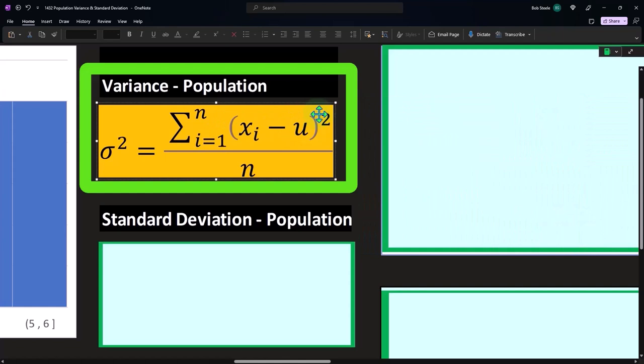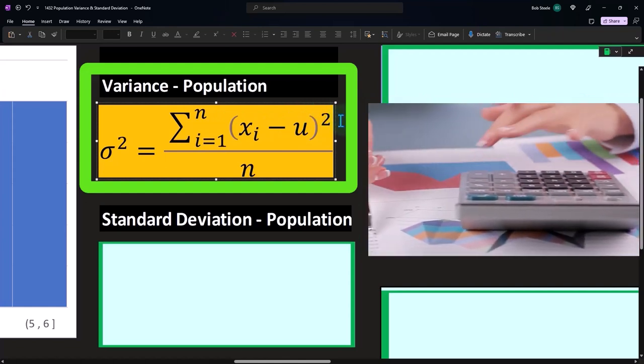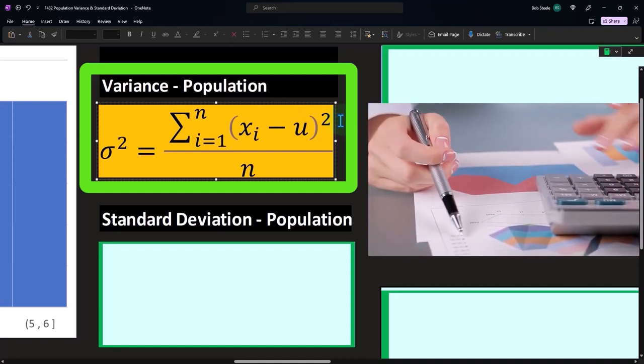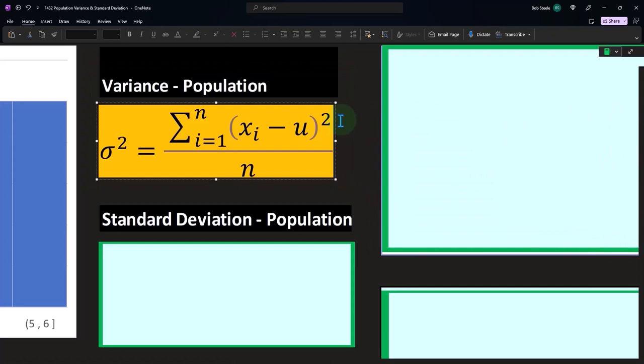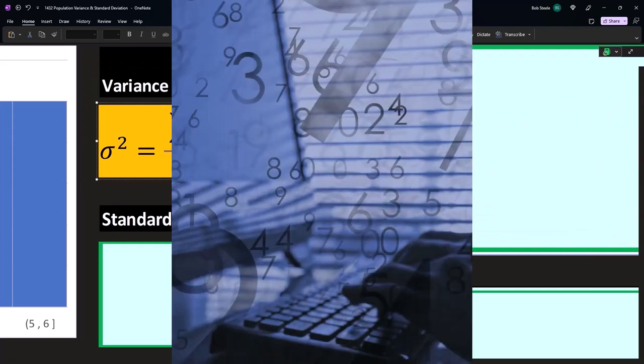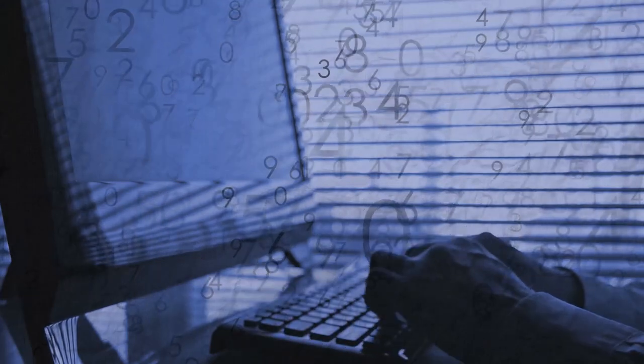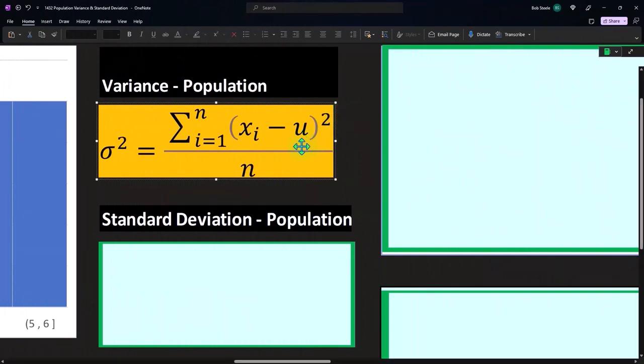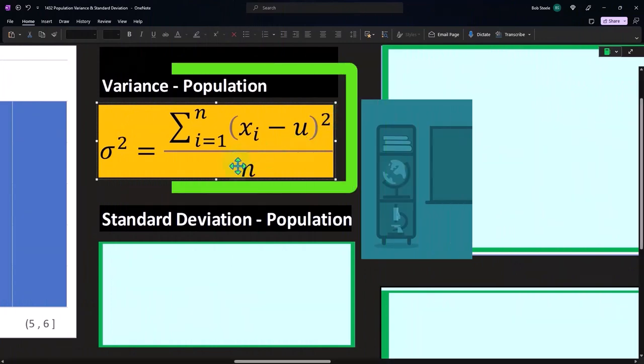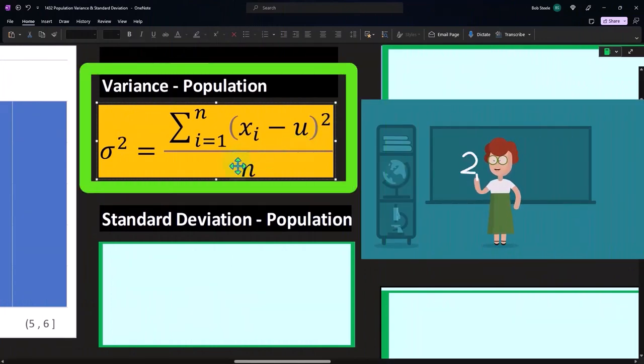Instead of taking the absolute value, we're going to square it. Note what that does—when I square it, it removes the negative numbers because squaring negative numbers results in positive numbers. But it also gives us a problem where everything is bigger since it's all been squared. Then I'm going to divide it by n, which is the count, similar to what we had with the average deviation.